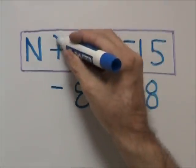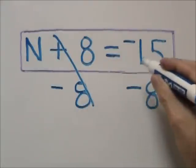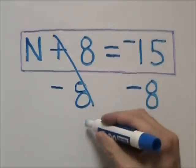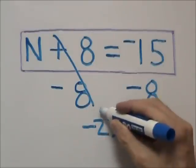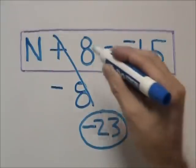On the left, the two 8s cancel each other out. On the right, negative 15 minus 8 equals negative 23. Therefore, negative 23 equals n.